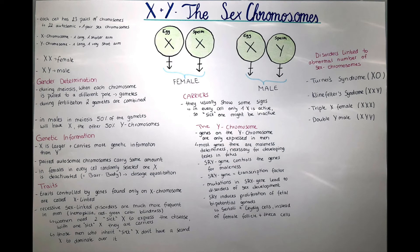Now let's talk about the different traits. Traits controlled by genes found only on the X chromosome are called X-linked. Recessive sex-linked disorders or X-linked disorders are much more frequent in men, because women need two of the affected X chromosomes to express a disease. When they only have one of the affected X chromosomes, they're so-called carriers.